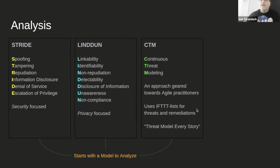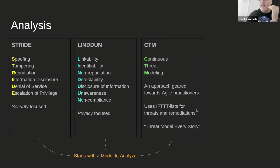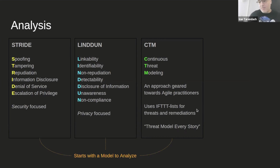These all start with a model to analyze — except perhaps CTM, which can start from zero, but STRIDE and LINDDUN require you to at least have an idea of what you are building. You have that representation, that data flow diagram, and you can refer to it. This maps to the four questions of Adam Shostack's Threat Modeling Manifesto: first, what are we building — which is largely the modeling phase; second, what can go wrong — which is the analysis phase.